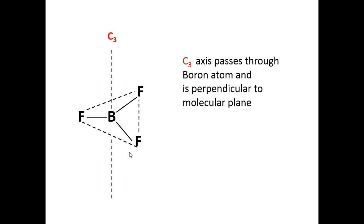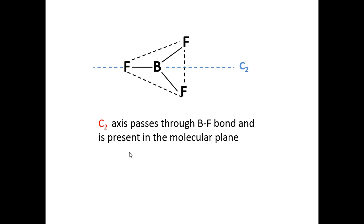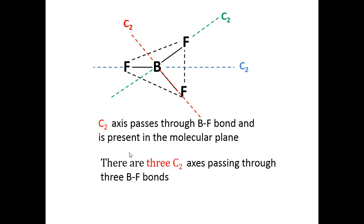The C3 axis passes through the boron atom and is perpendicular to the molecular plane. Apart from this, there is an axis of rotation passing through each boron-fluorine bond, lying in the molecular plane — this is a C2 axis. During rotation about the C2 axis through 180 degrees, atoms on the axis do not shift, while the C2 axis bifurcates the two other BF bonds and interchanges the two fluorine atoms. For each BF bond there is a C2 axis, giving three C2 axes in total.